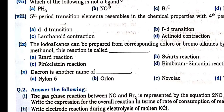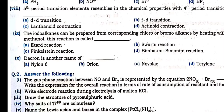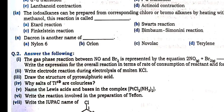Dacron is the name of which polymer? Nylon-6, Orlon, Novolac, or Terylene? The name is Terylene.